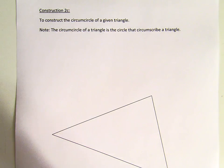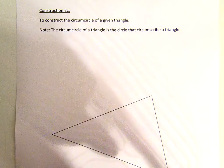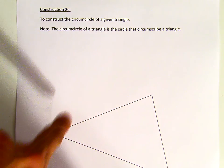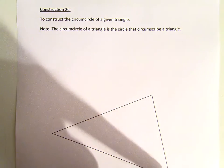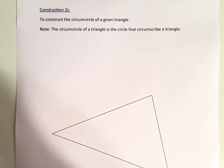What is a circumcircle? A circumcircle is the circle that circumscribes the triangle, meaning that circle will pass through all three vertices of the triangle.